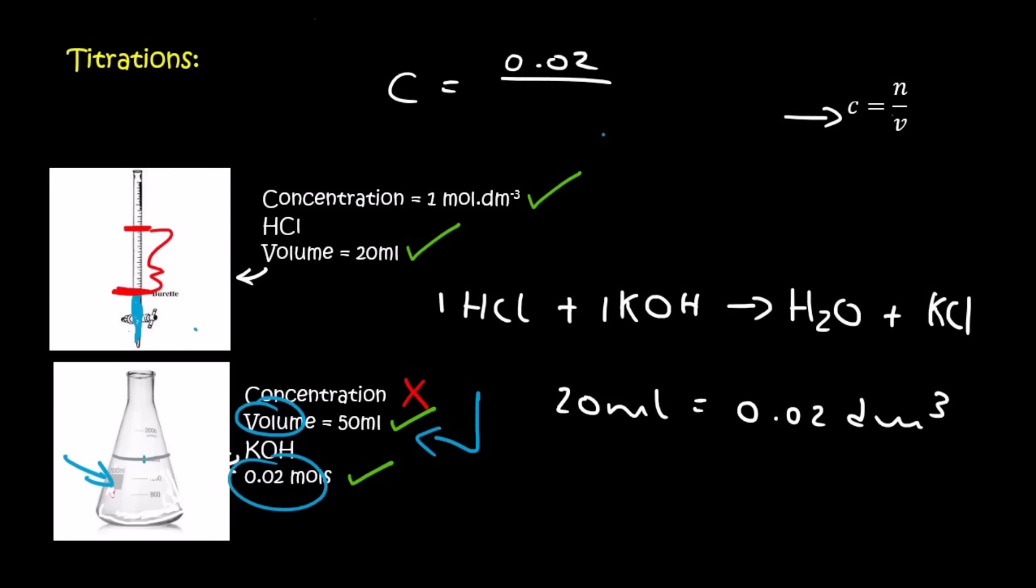The volume, remember 50 milliliters, is 0.05 decimeters. So we'll say 0.05. And then if we calculate that, we end up with a concentration of 0.4 moles per decimeter. And so we are complete. Why? Because the goal of a titration is to find the concentration of an unknown liquid. So guys, that is the basics of a titration.